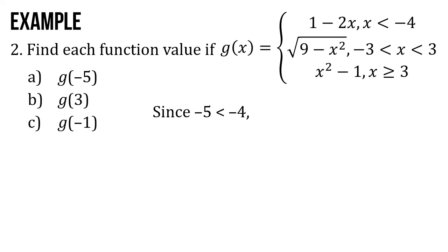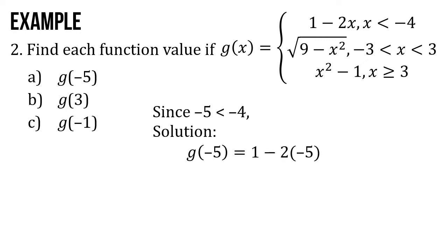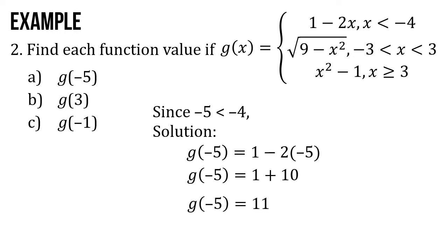Since negative 5 is less than negative 4, we're going to use 1 minus 2x. So g of negative 5 equals 1 minus 2 times negative 5. g of negative 5 equals 1 plus 10. So g of negative 5 is equal to 11.